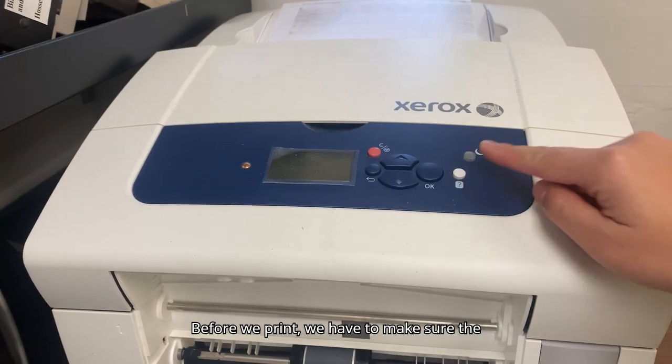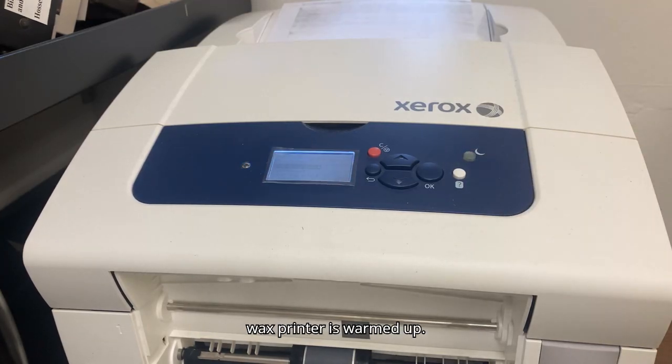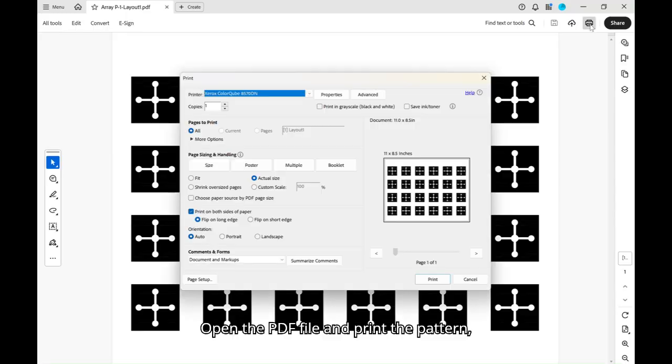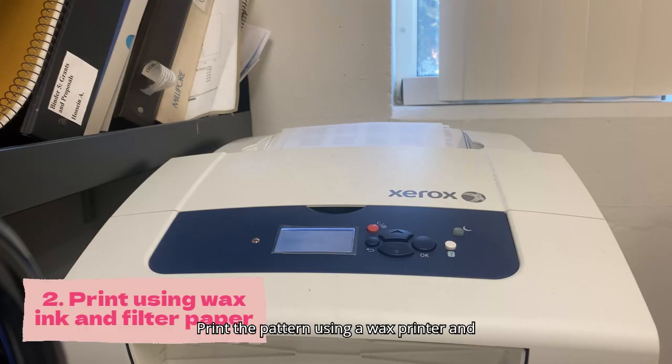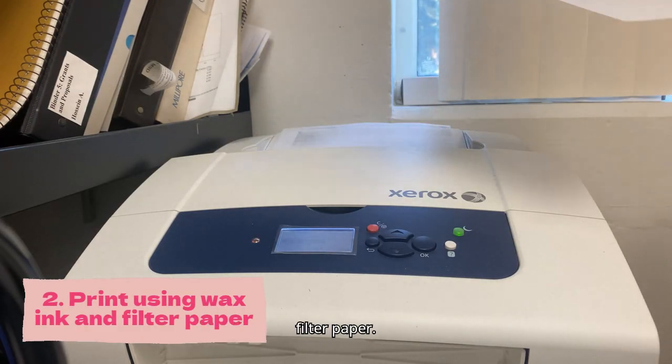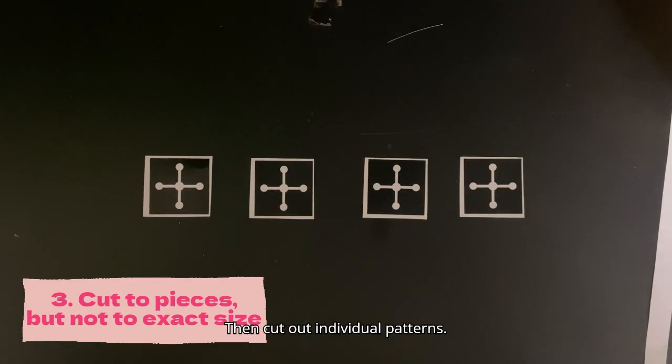Before we print, we have to make sure the wax printer is warmed up. Open the PDF file and print the pattern, making sure the wax printer is chosen as the printer name. For this, the wax printer is called Xerox Color Cube. Print the pattern using a wax printer and filter paper. Then cut out individual patterns.